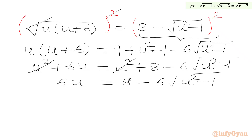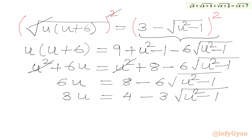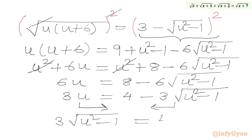The equation is divisible by 2, so dividing both sides by 2 gives 3u = 4 - 3√(u²-1). Rearranging, taking the negative term to the LHS: 3 times square root of (u² - 1) equals 4 minus 3u.